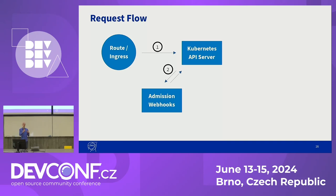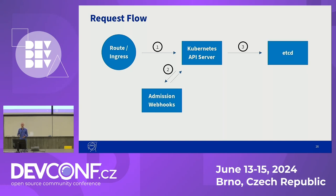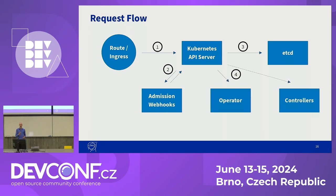Once these validations have passed, the Kubernetes API server then invokes the mutating admission webhooks. As the name suggests, these webhooks can actually change the request on the fly. Only after the mutating webhooks have run and possibly modified the requested object, the object then gets stored into the etcd database. Afterwards, the Kubernetes API server notifies all the components that have a watch on this particular resource kind, such as operators and controllers — most importantly, of course, the ingress controller.